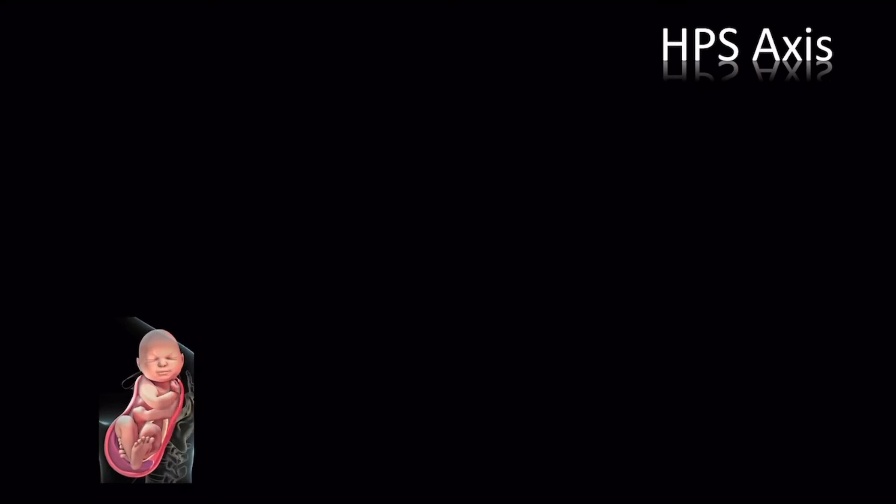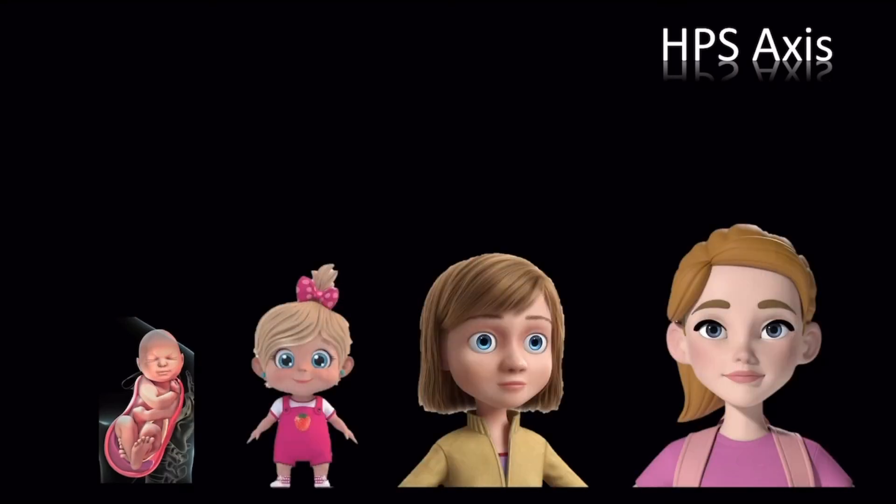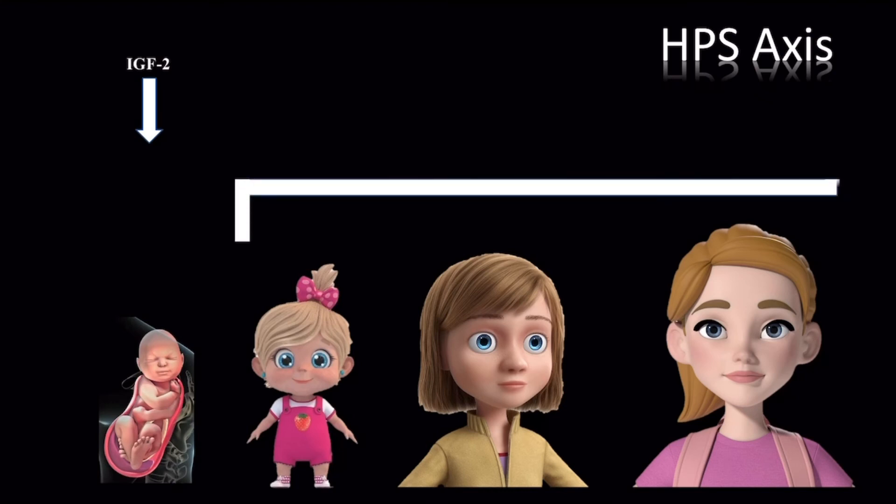To summarize, the HPS axis manages development and growth from early embryonic stages throughout childhood and puberty. Prenatally, it is IGF-2 alone that drives development and growth. However, from birth to puberty, it is GH and IGF-1 that mediate development and growth. After puberty, GH decreases in concentration as maximal body size has mostly been attained.